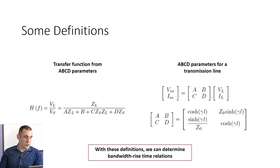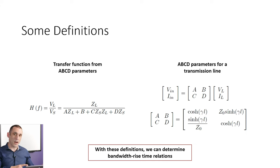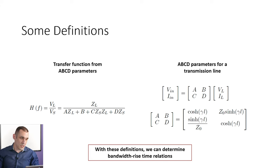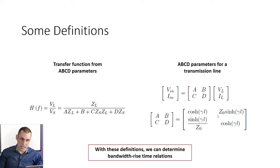If we want to determine a transfer function for a transmission line, in my opinion the easiest mathematical tool to use is the ABCD parameters. In a previous video I talked about how to convert between S parameters and ABCD parameters, so there is an analogous definition in terms of S parameters, but for now we're just going to use ABCD parameters. I have the definition for the transfer function in terms of the voltage at the load and the voltage from the source, defined in terms of these network parameters, which are given in terms of the transmission line impedance and its propagation constant.